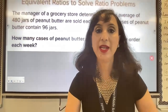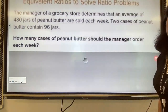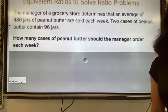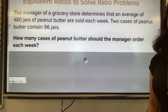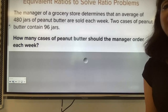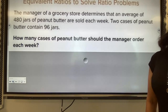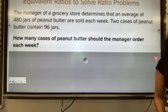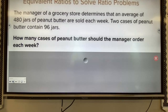The manager of a grocery store determines that an average of 480 jars of peanut butter are sold each week. Two cases of peanut butter contain 96 jars. How many cases of peanut butter should the manager order each week? Several techniques are possible, so I am going to create a double number line.